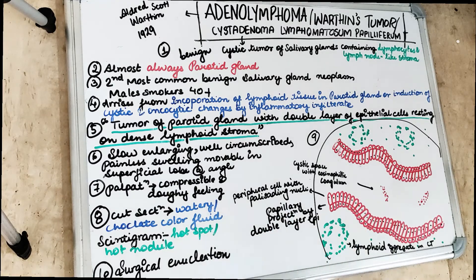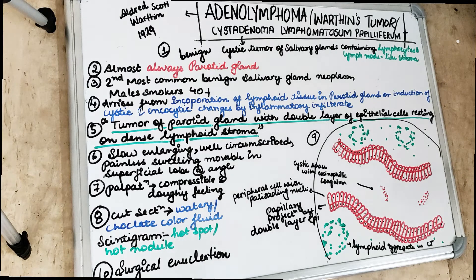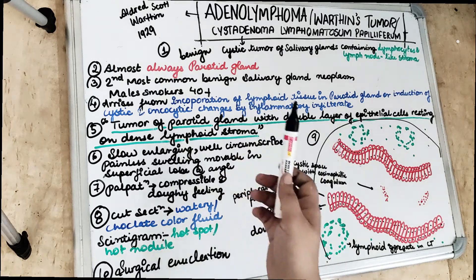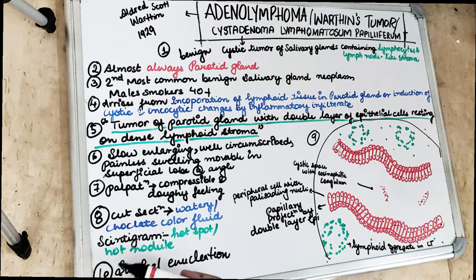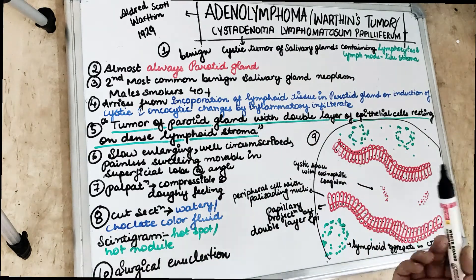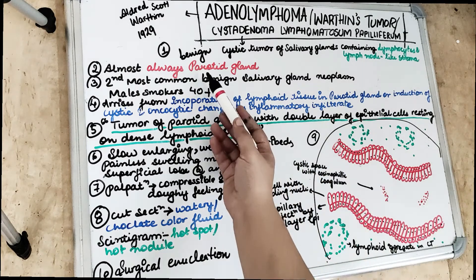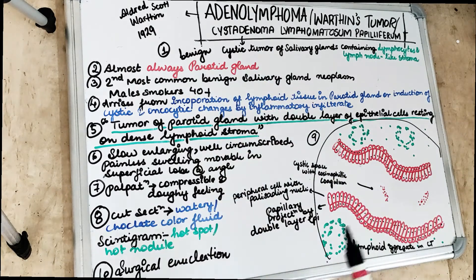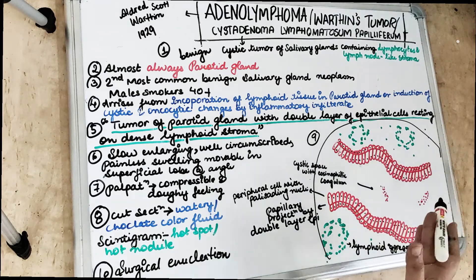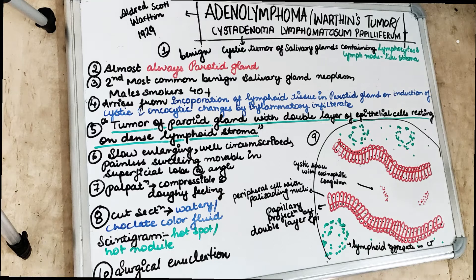Pleomorphic adenoma, which we covered in the previous video, is the most common benign salivary gland neoplasm. Adenolymphoma or cystadenoma lymphomatosum papilliferum is a common tumor of the parotid gland — almost always seen in the parotid gland. Most commonly, it is seen in male smokers above 40 years of age.